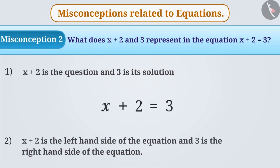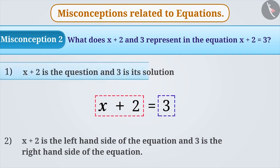Many times, it becomes obvious that the question of mathematics is written on the left-hand side of the equal to sign and the answer on the right. Due to this misunderstanding, x + 2 is believed to be the question and 3 is its answer.